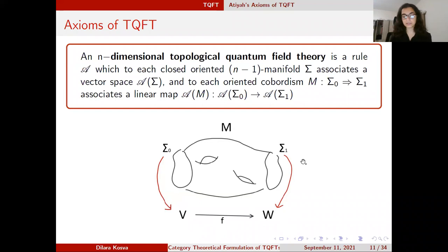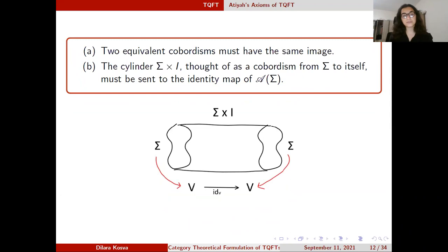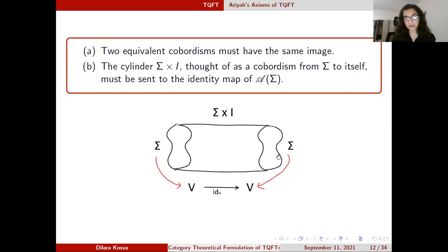This rule satisfies some axioms. The first: two equivalent cobordisms must have the same image, which just guarantees that the TQFT is well-defined, since we talk about cobordism classes. Also, the cylinder, thought of as a cobordism from sigma to itself, must be sent to the identity map. With the cylinder construction, in-boundary and out-boundary are diffeomorphic, so we want this to go to V and V again — the image of the cobordism must be the identity map.